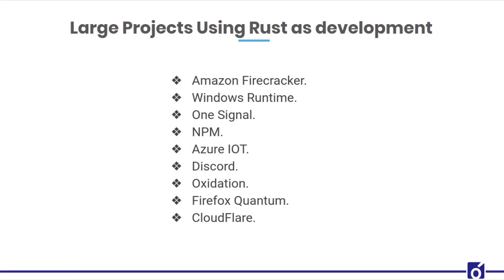The next project is Windows Runtime — a platform-agnostic application architecture first introduced in Windows 8 and Windows Server 2012 and 2016. Microsoft has long dependence on C++ as its backbone, but it has challenges particularly around security. Modern C++ makes it easier to write safe and secure code if you follow careful conventions, but that is often hard to enforce in a large project.